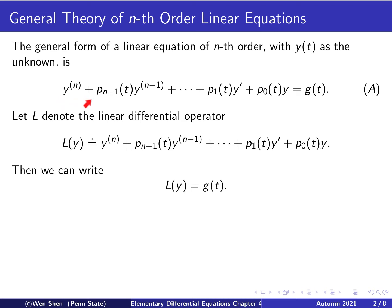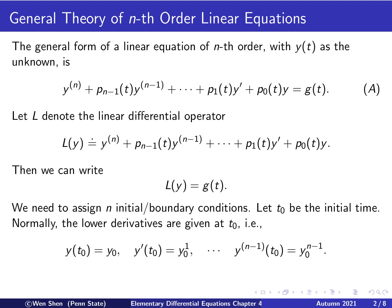Once we call the left-hand side L applied on y, we can rewrite equation A in a more compact form: the linear operator applied to y equals g(t). We have noticed in our earlier studies of first-order and second-order linear equations that a first-order equation needs one initial condition, a second-order equation needs two, and in general the total number of conditions matches the order of the equation.